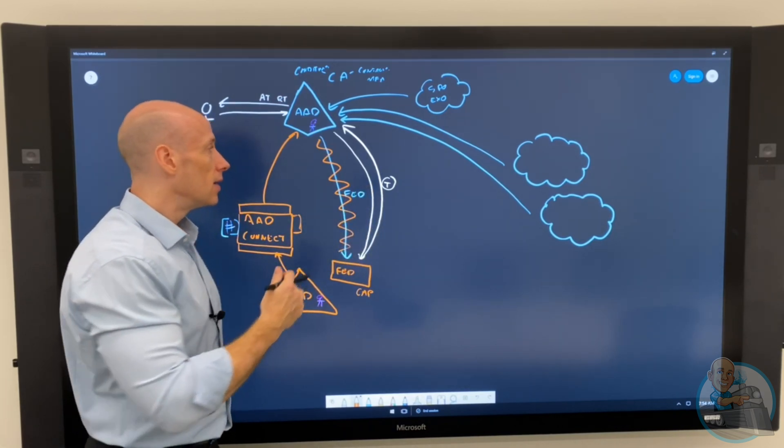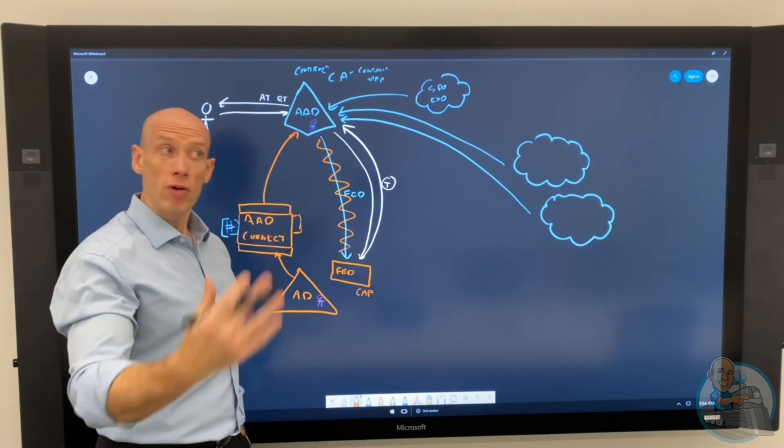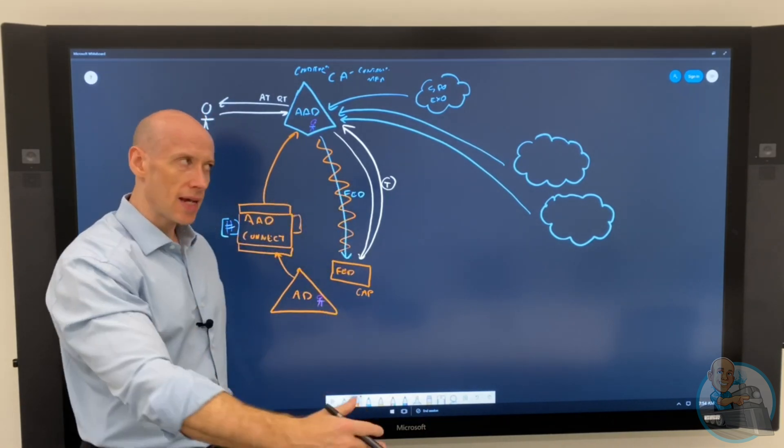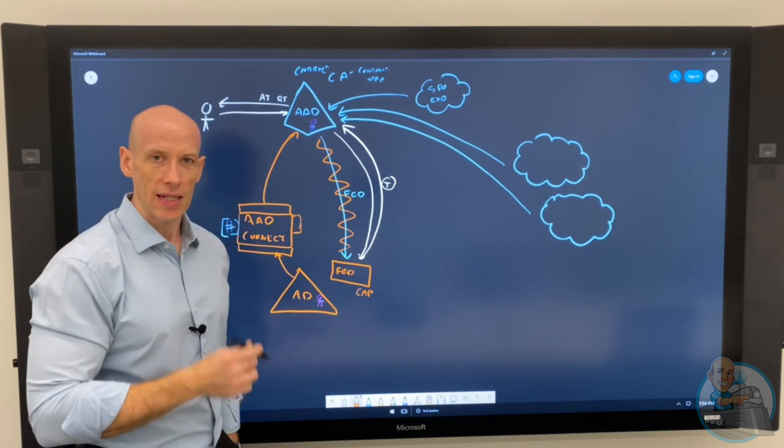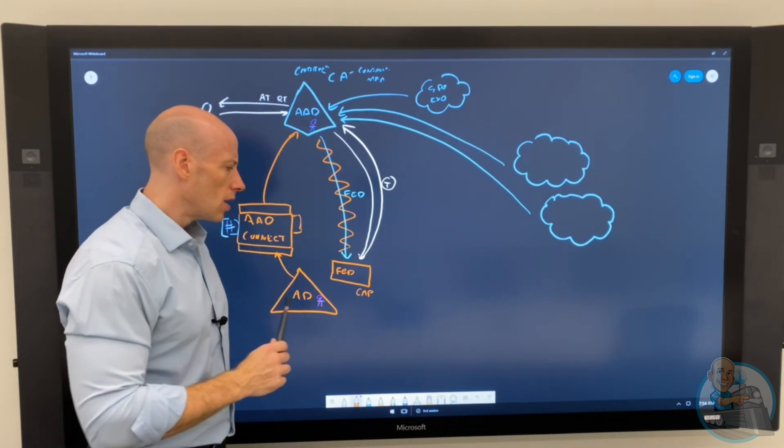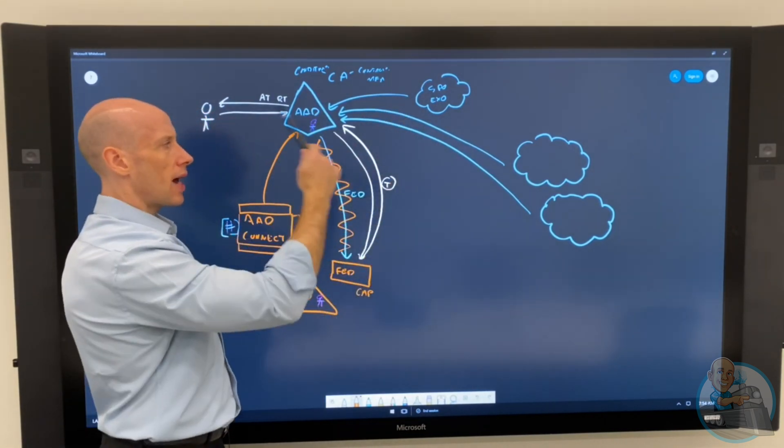It makes the change against Active Directory and then syncs the password up if I've got password sync turned on. I don't even have to do that. So I can still use password reset, self-service password reset, password change. Even if I am federated, it doesn't change that. So hopefully that kind of clears up that flow.